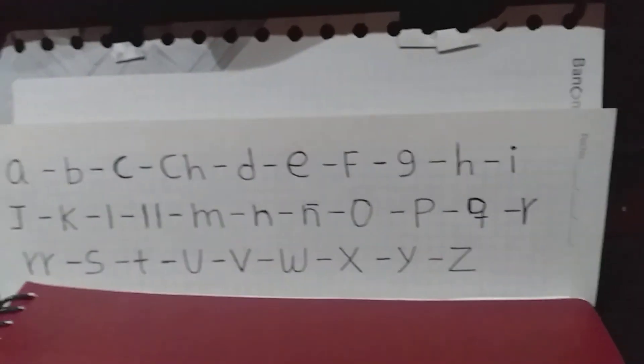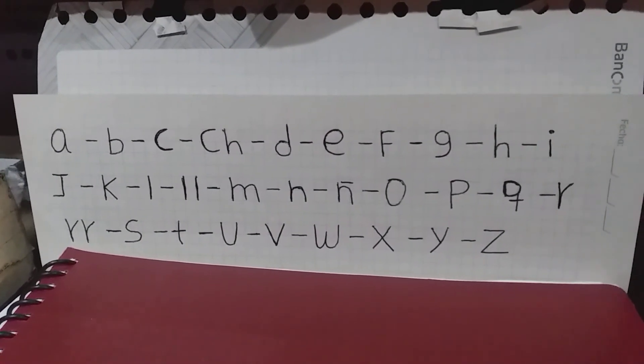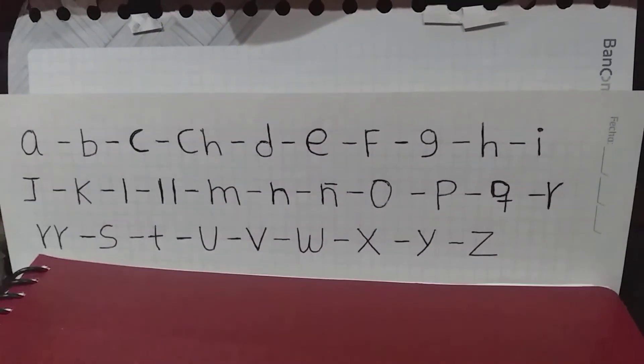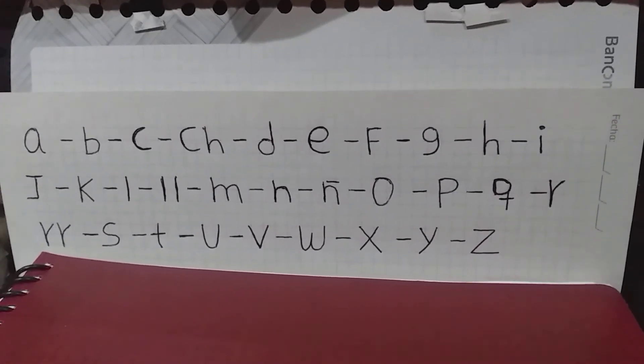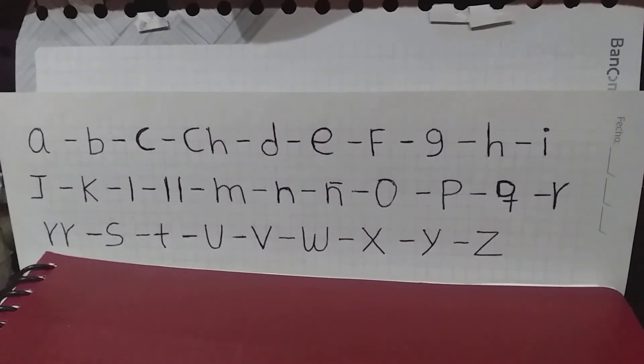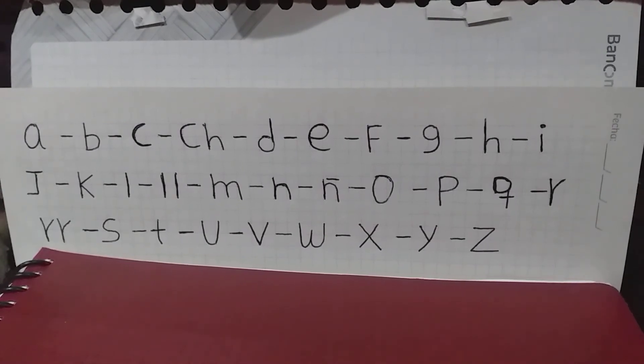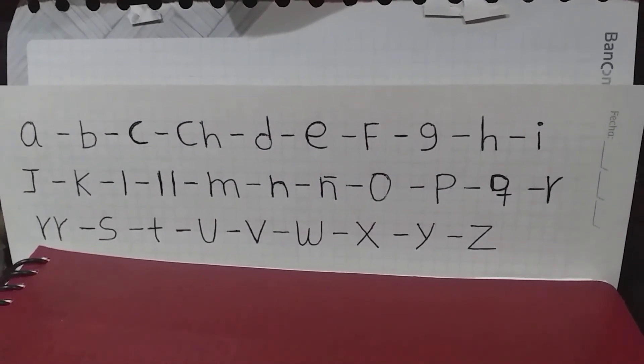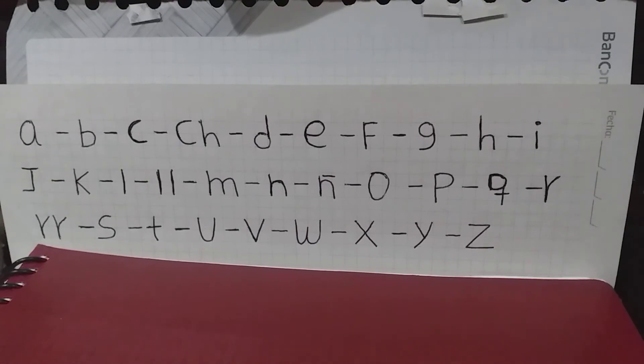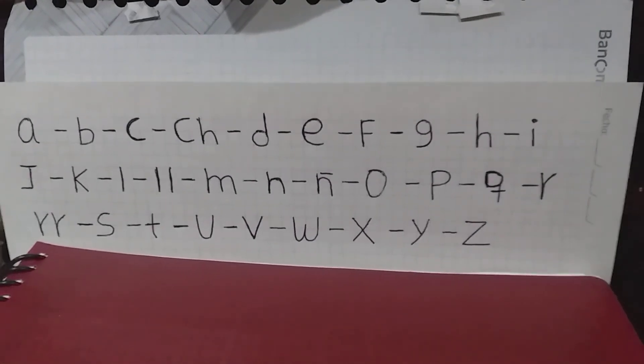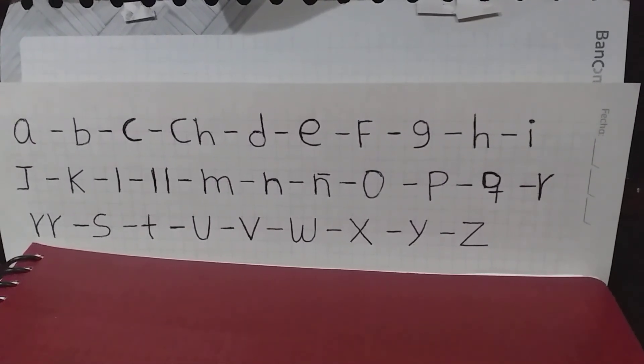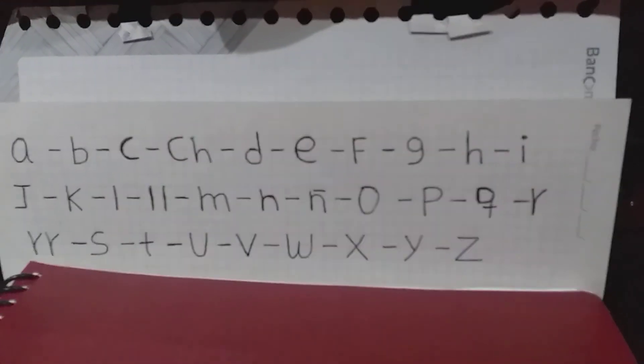Okay. El alfabeto de español. Let's look at it. A, B, C, Ch, D, E, F, G, H, I, J, K, L, M, N, Ñ, O, P, Q, R, R o doble R, S, T, U, V o B corta, W, X, Y o I griega, Z. Chao, chao.